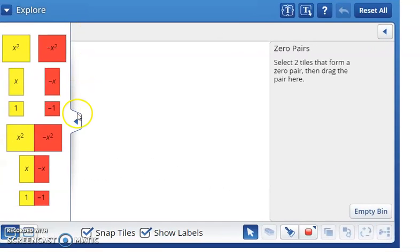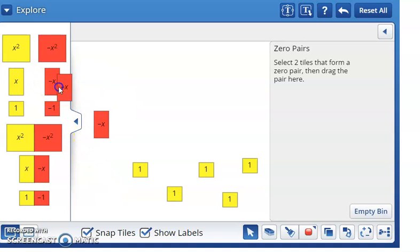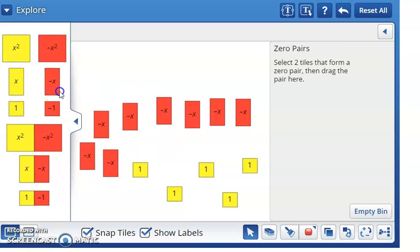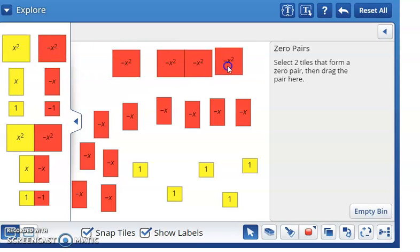We need 5 ones, so 1, 2, 3, 4, 5. And then we need 10 negative z's, so we're going to get 10 of these. And then we need 5 negative z squared, 1, 2, 3, 4, 5.